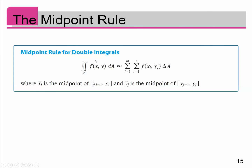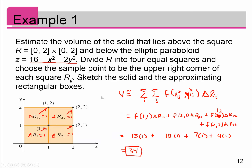The midpoint rule looks like this: if I wanted to find the double integral over R of f(x,y) dA, I could approximate that by doing the sum over all of my sub-rectangles and plug in the midpoint of each of those functions. So instead of choosing points at the right corners, we find the midpoint — the halfway point between each edge of the sub-rectangle.